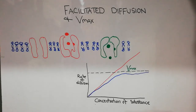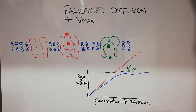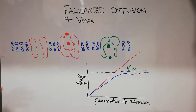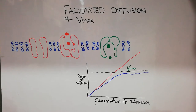In this lecture we are going to discuss facilitated diffusion and the VMAX, or maximum rate of diffusion through facilitated diffusion. Previously, we discussed that through the cell membrane there are different types of transport. Transport may be passive transport or active transport. Passive transport does not require energy and does not use ATP, while active transport needs energy or ATP.